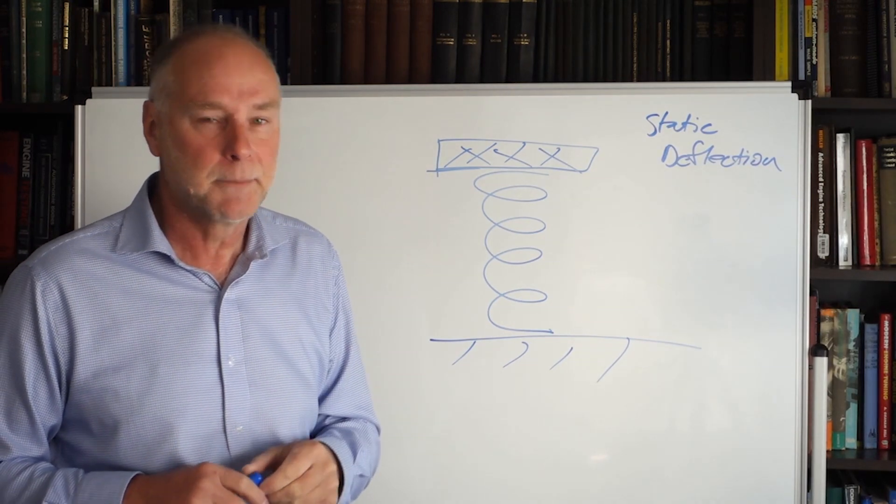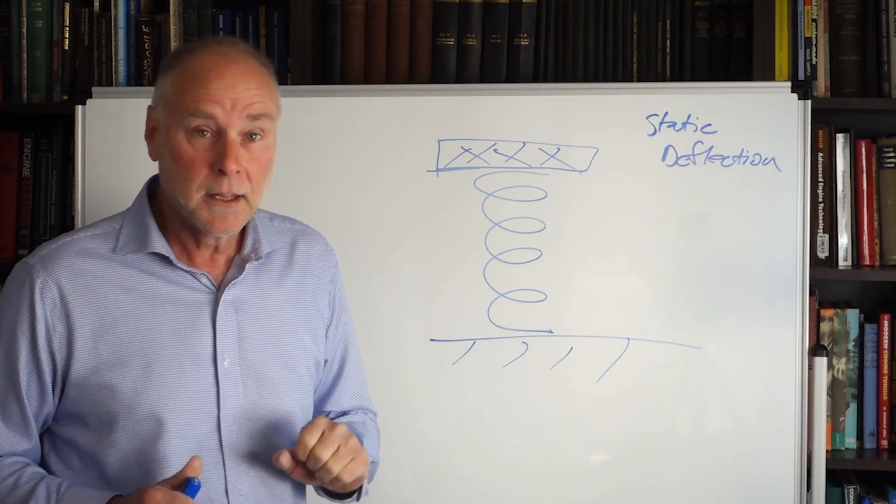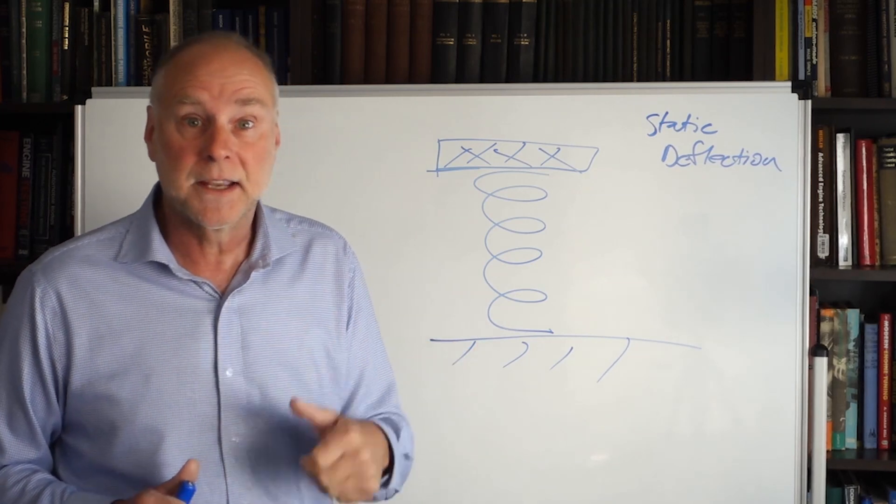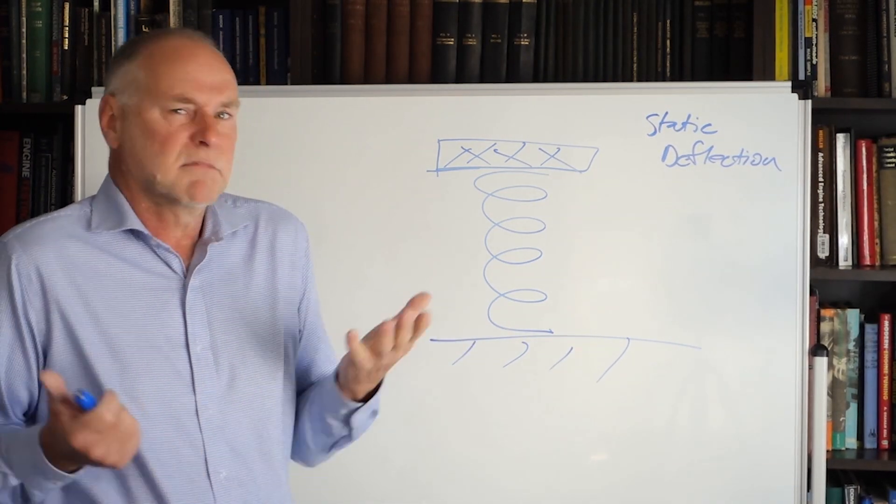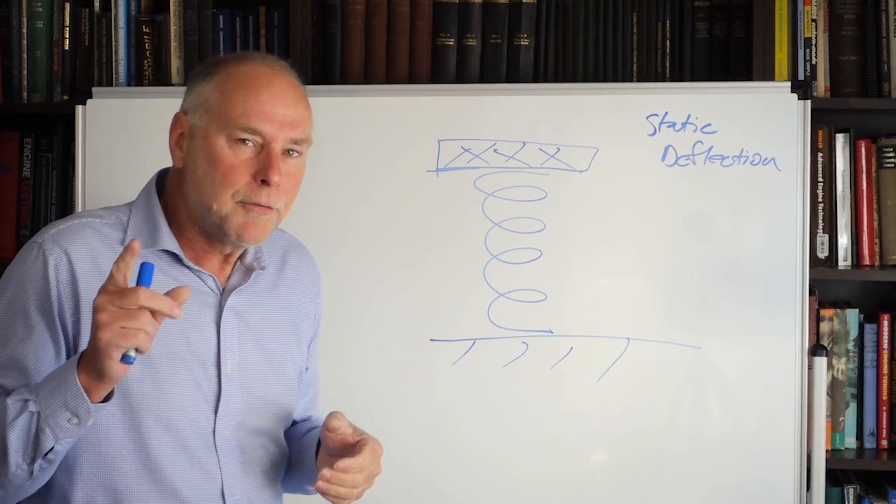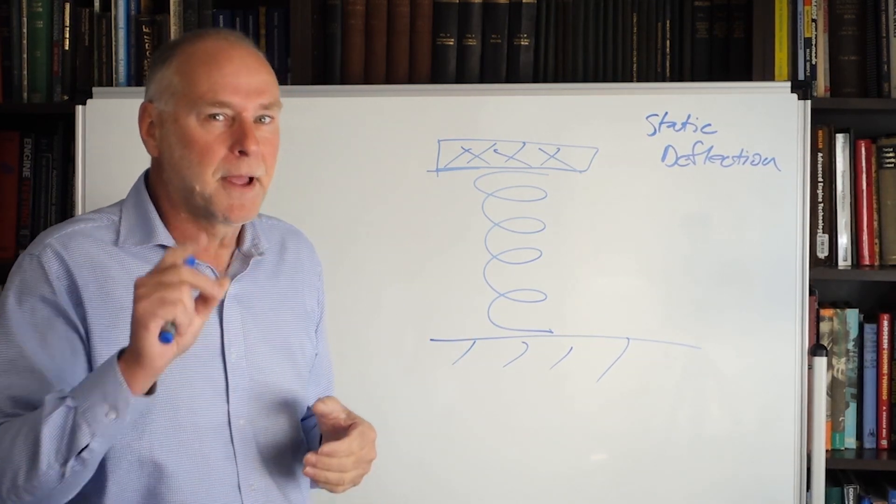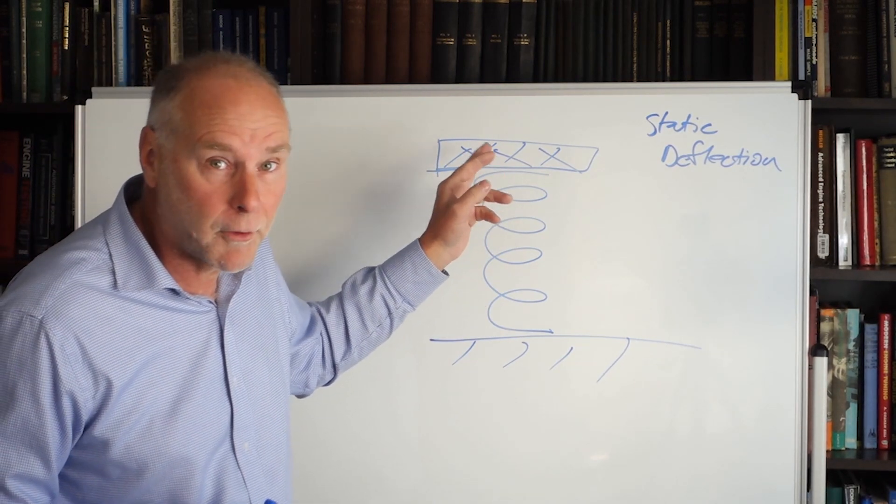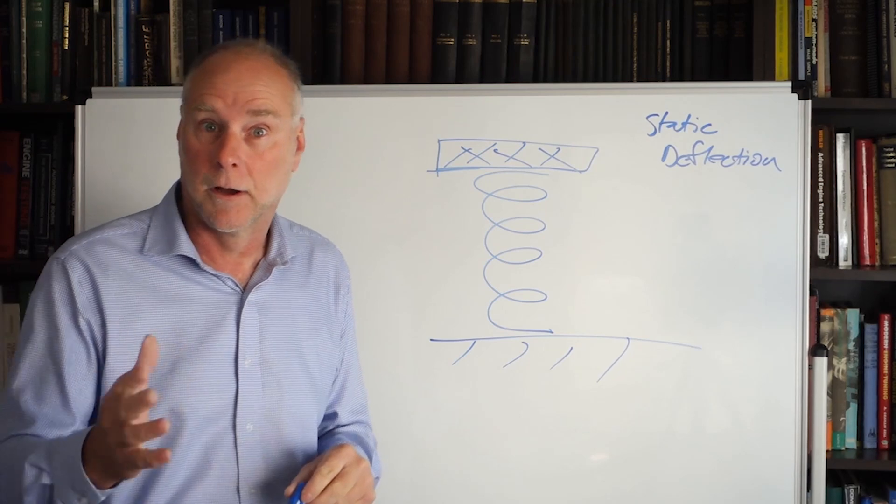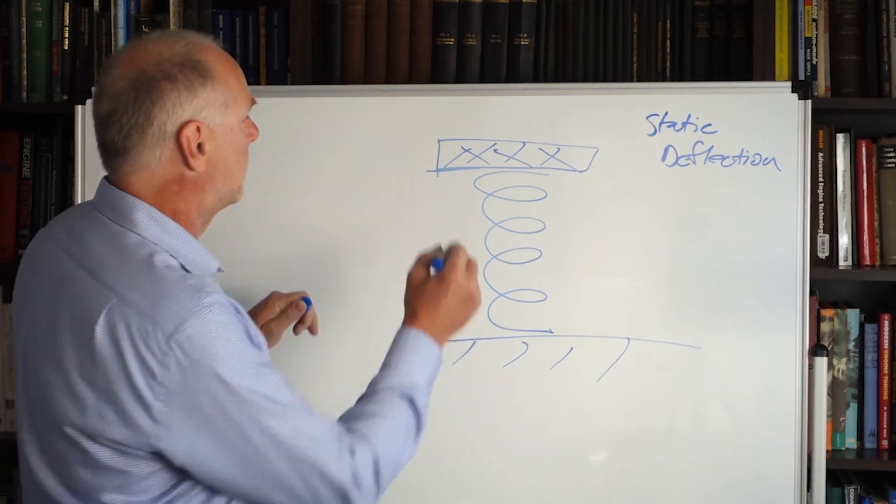60 bounces in a minute is one per second, and we would give that what's called a frequency of one hertz, one bounce per second. So what? Well, the bounces and the number of bounces depended on the stiffness of the spring, but it also depended on the amount of weight that was on top. So let's put another weight on top.